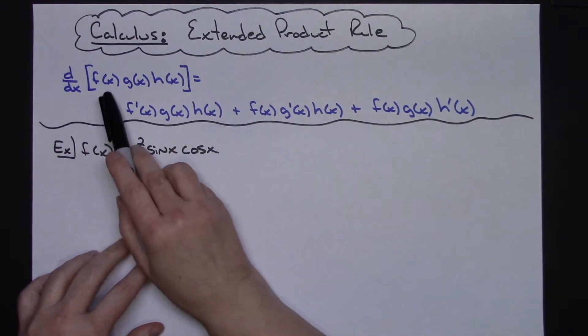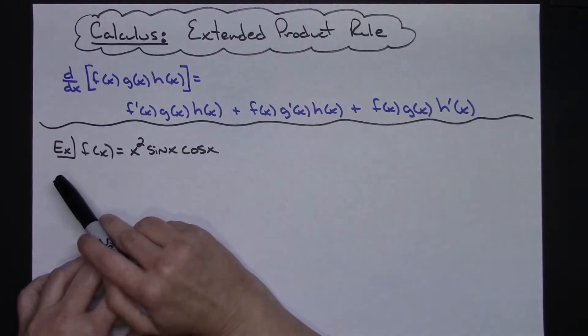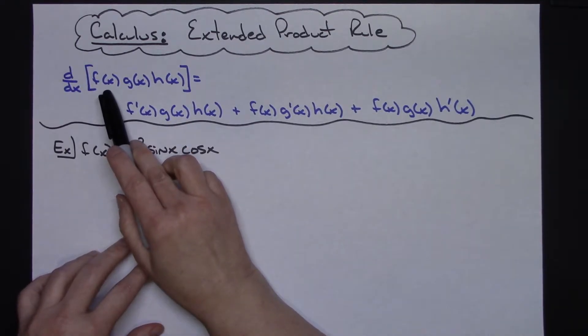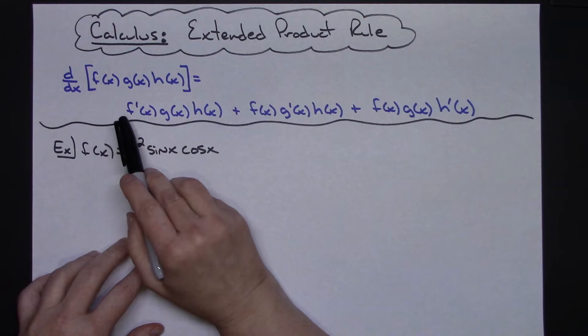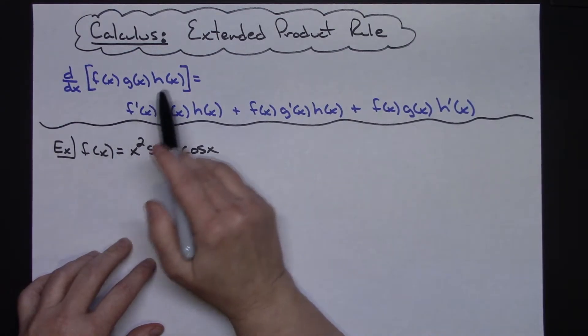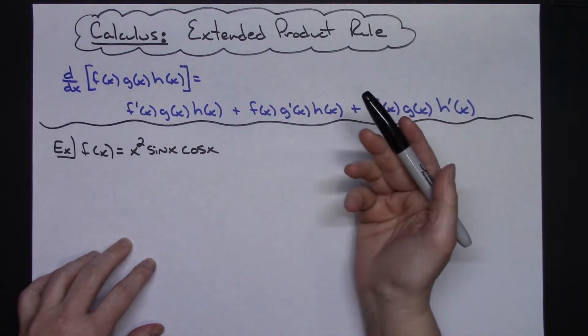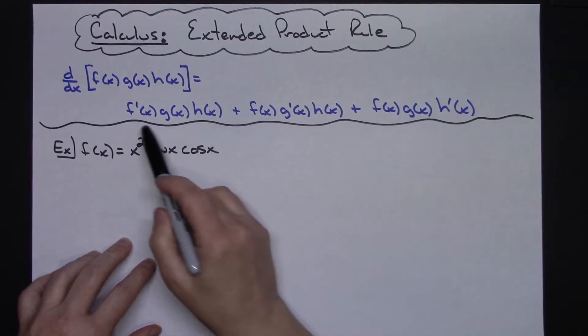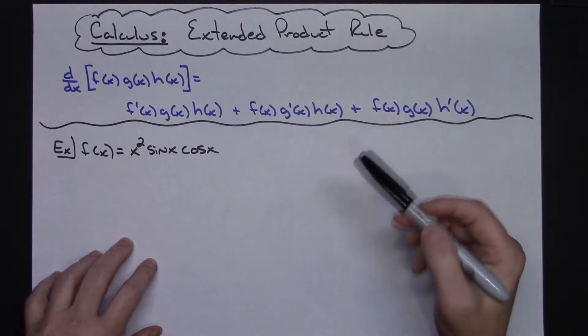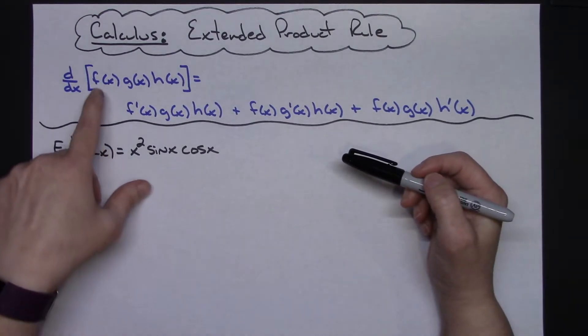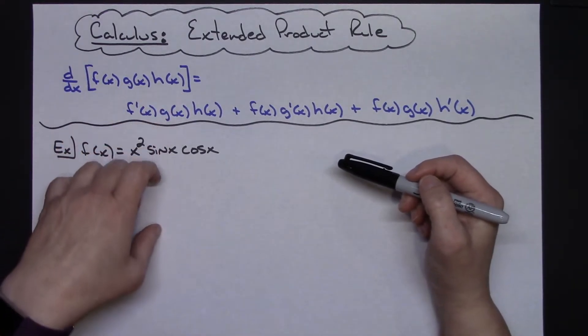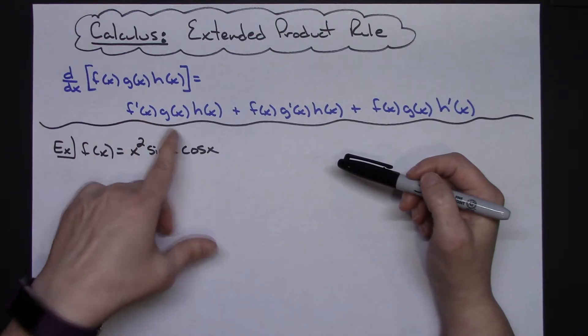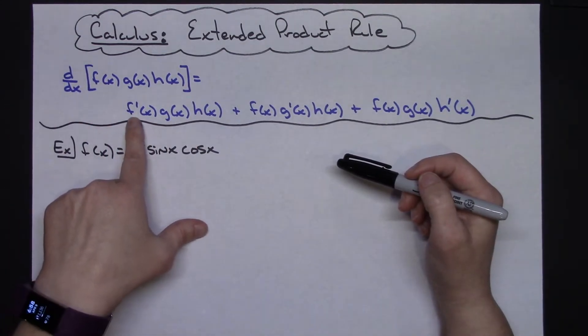If you've got like three products - I've got functions f(x), g(x), and h(x) and I need to take the derivative - for the extended product rule I'm going to basically have three products because I have three functions, and each one of the products I'm going to take the derivative of each one of the functions individually.